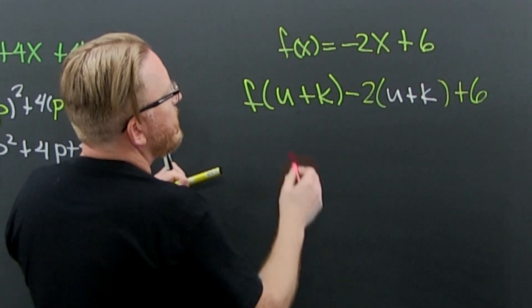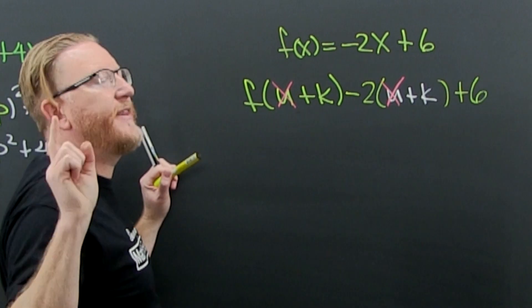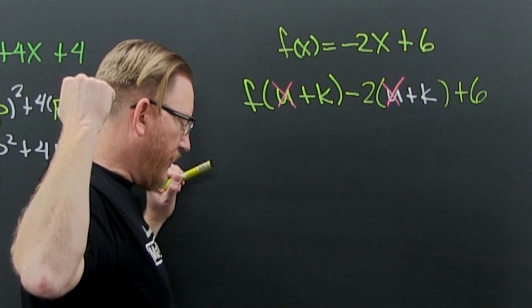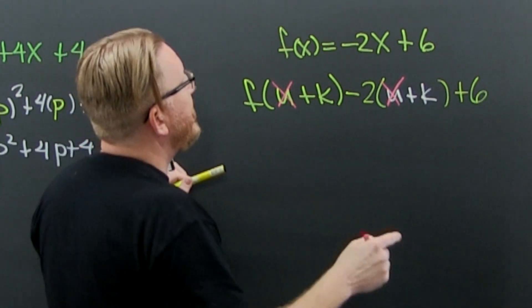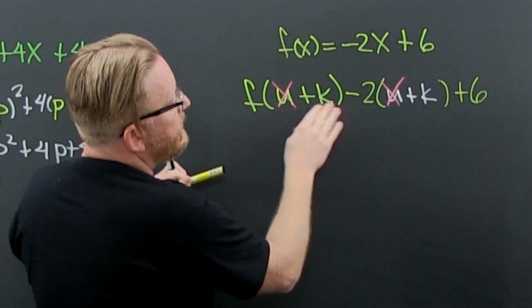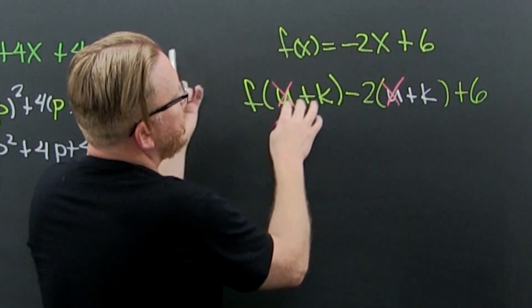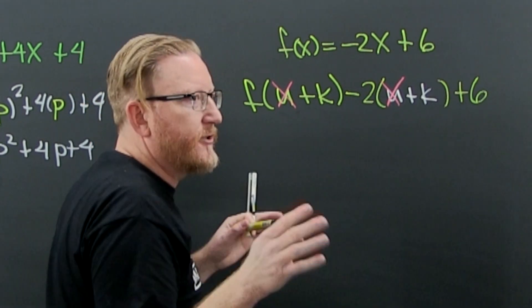When you were presented with this problem, they probably used an x there and an x there. I changed it to any other letter, but they probably had x+k or x+h. They're trying to get you ready for the difference quotient.